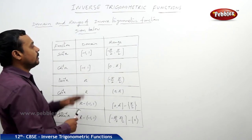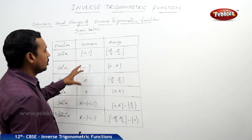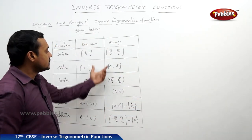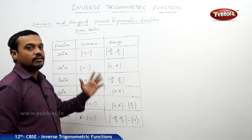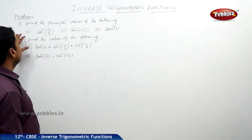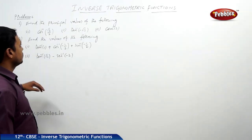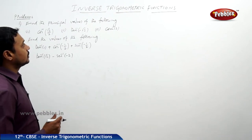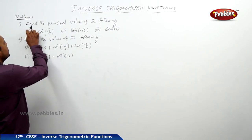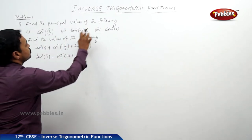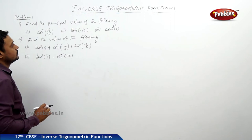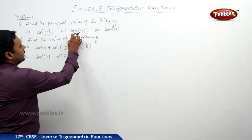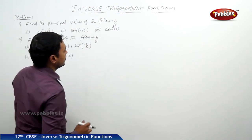Remember this table for further properties of these six inverse trigonometric functions. Now, here are two problems on the definition of the inverse of trigonometric functions. The first one is: find the principal values of the following.